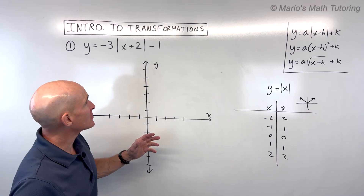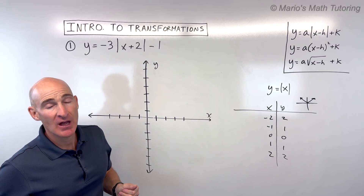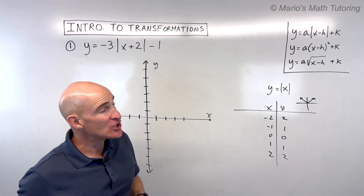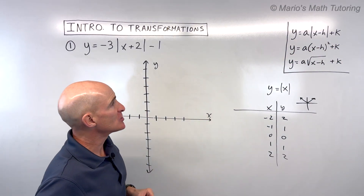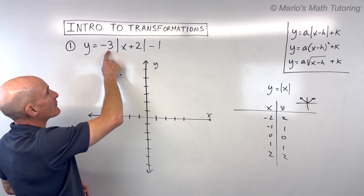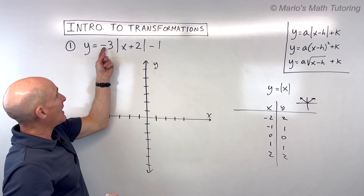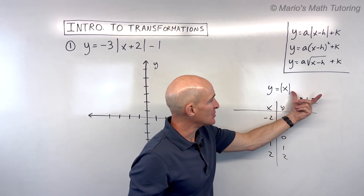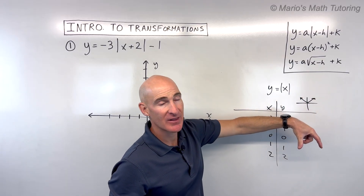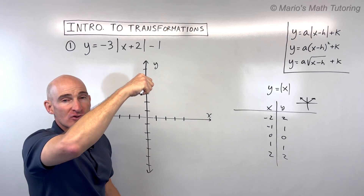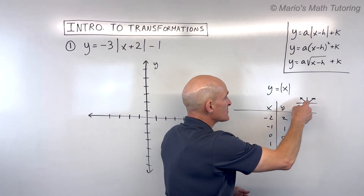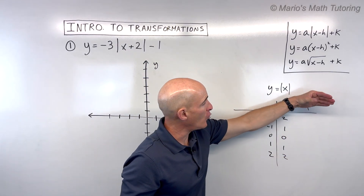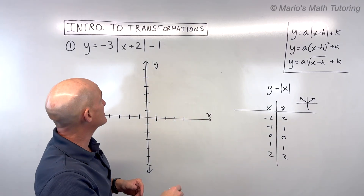What we want to do now is see how this function is going to look with all these transformations. When it's in this form — a times the quantity x minus h, plus k — you can just work from left to right. The a value here, if it's negative outside of the absolute value, it's going to make all the y values the opposite, reflecting the graph over the x-axis. The three means a vertical stretch by a factor of three, making it narrower. Because this is a negative three, it's going to reflect it over the x-axis and make it open down.